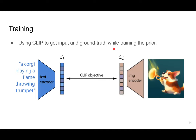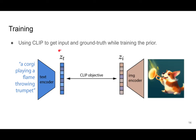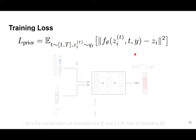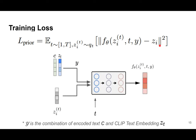During training, getting data is easy. All we need is CLIP and caption-image pairs — we use CLIP to get ZT as the input and ZI as the ground truth. The training loss is straightforward: you take the mean squared error loss between the predicted image embedding and the original ground truth image embedding.